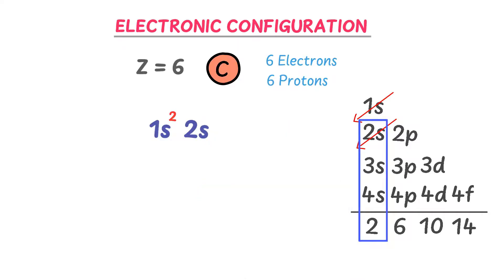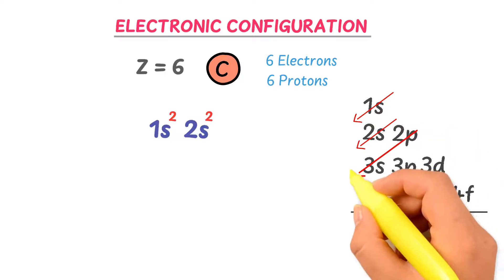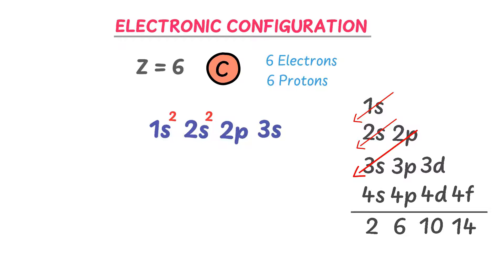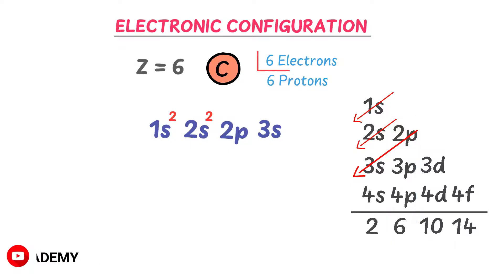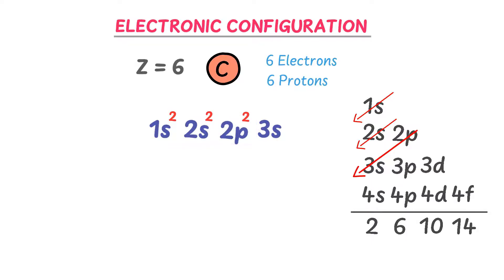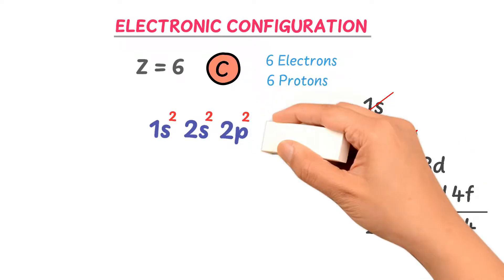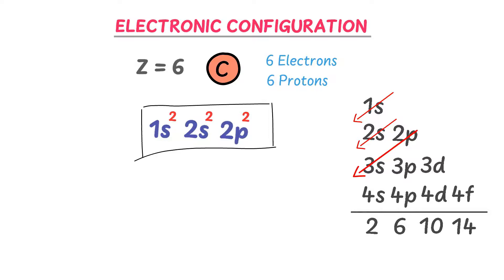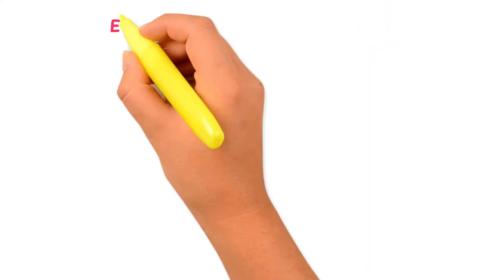Then I write 2p. The p subshell can accommodate 6 electrons, but we have already configured 4 electrons in the s subshells, so we write only 2 electrons in the 2p subshell: 2+2+2=6. The 3s subshell is not needed, so I erase it. This is the electronic configuration of carbon: 1s² 2s² 2p². Carbon is a p-block element because its valence electrons lie in the p subshell.